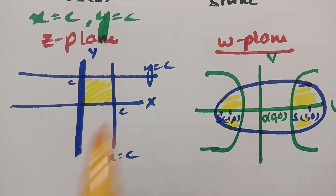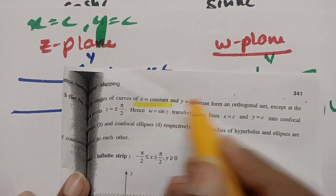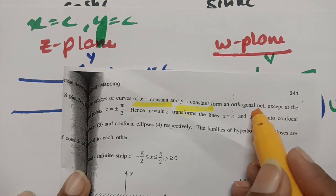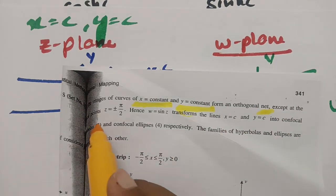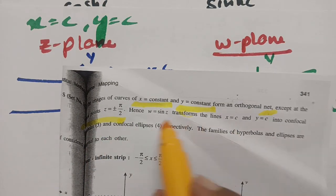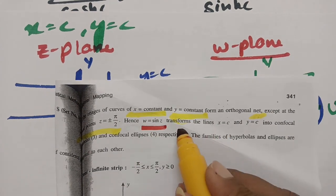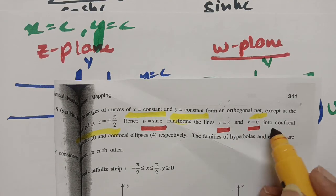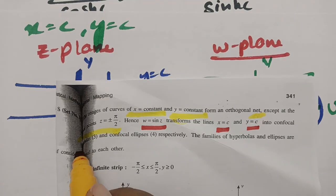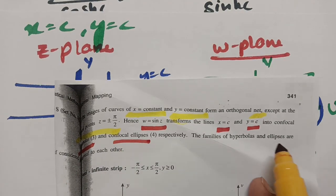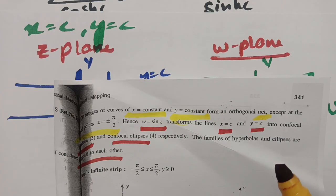From the textbook, the images of curves x = c and y = constant form an orthogonal net, except at the critical points z = ±π/2. Hence w = sin(z) transforms the lines x = c and y = c into confocal hyperbolas and confocal ellipses respectively, and these families are orthogonal to each other.